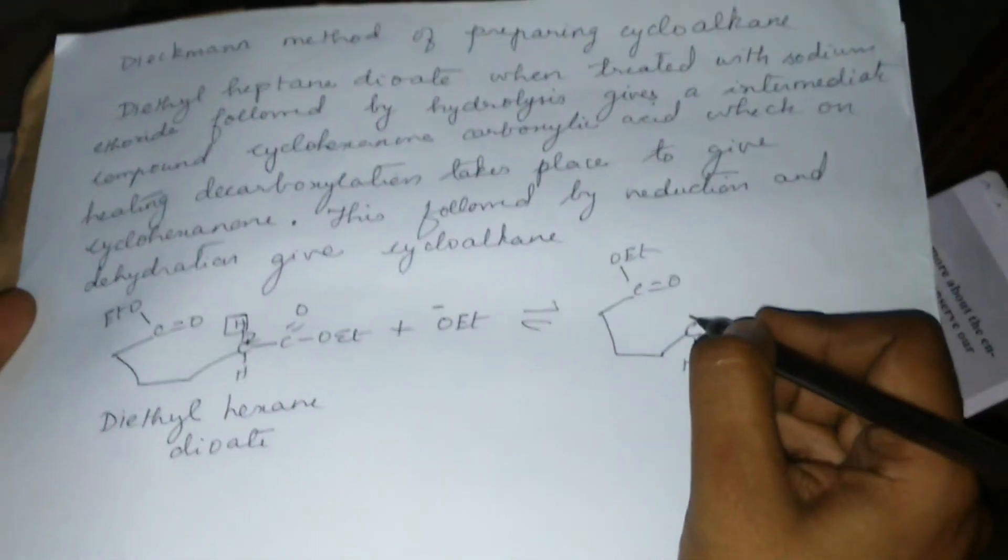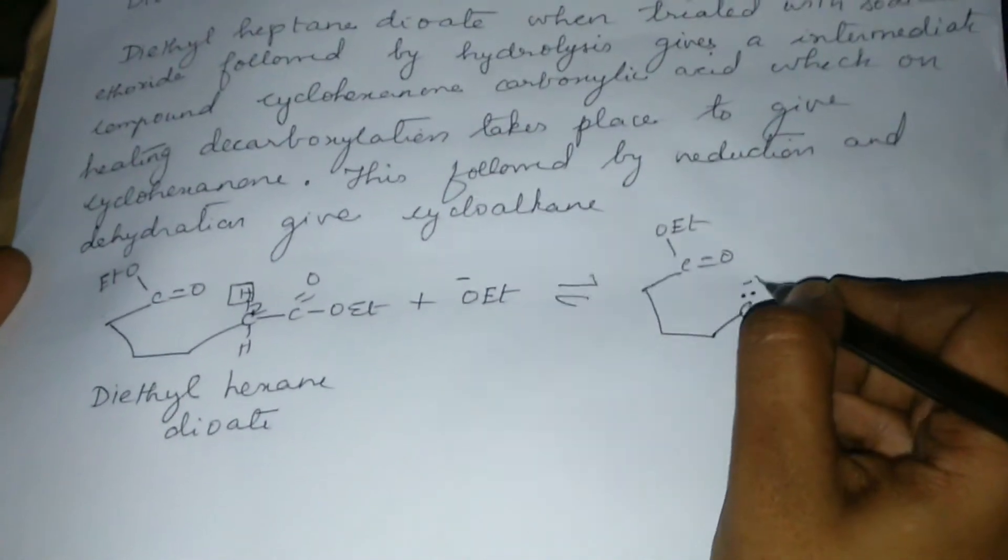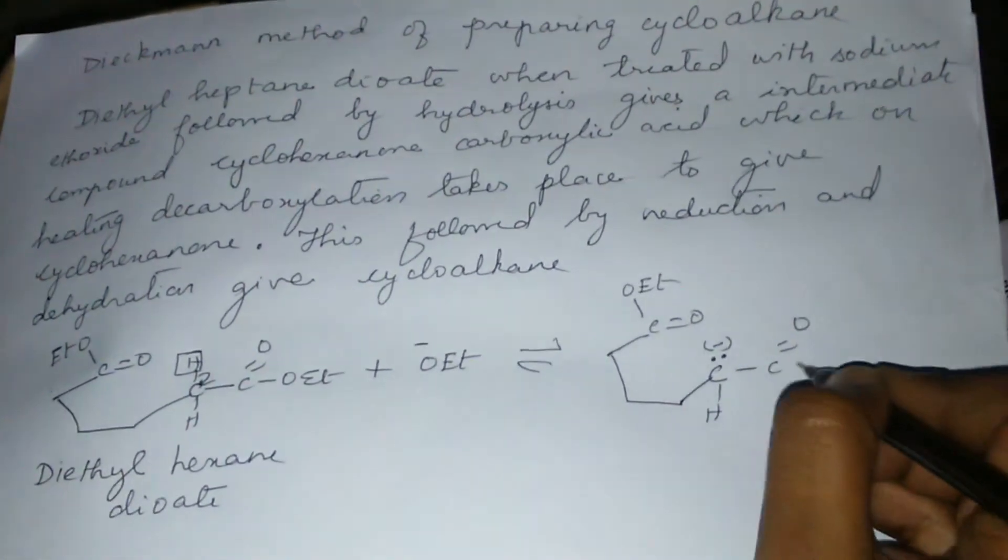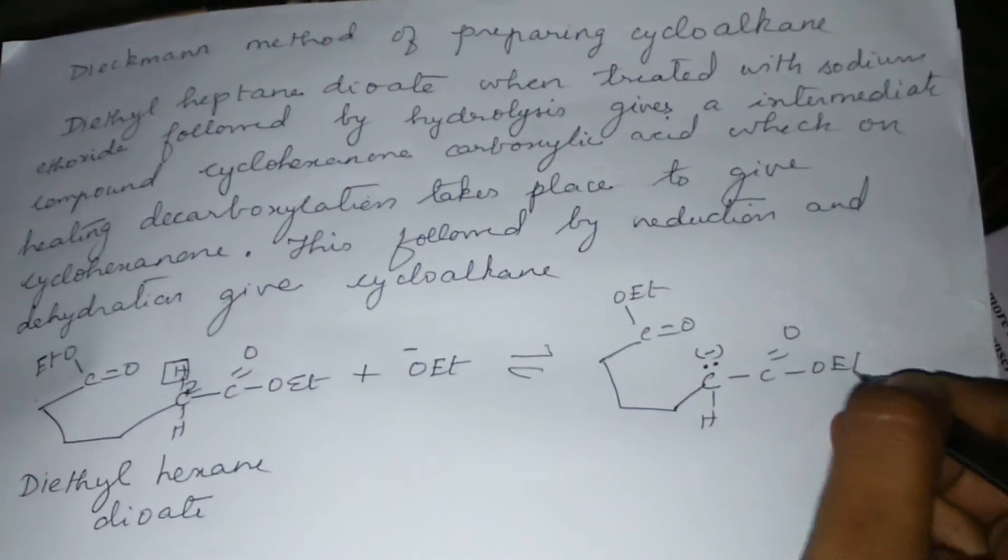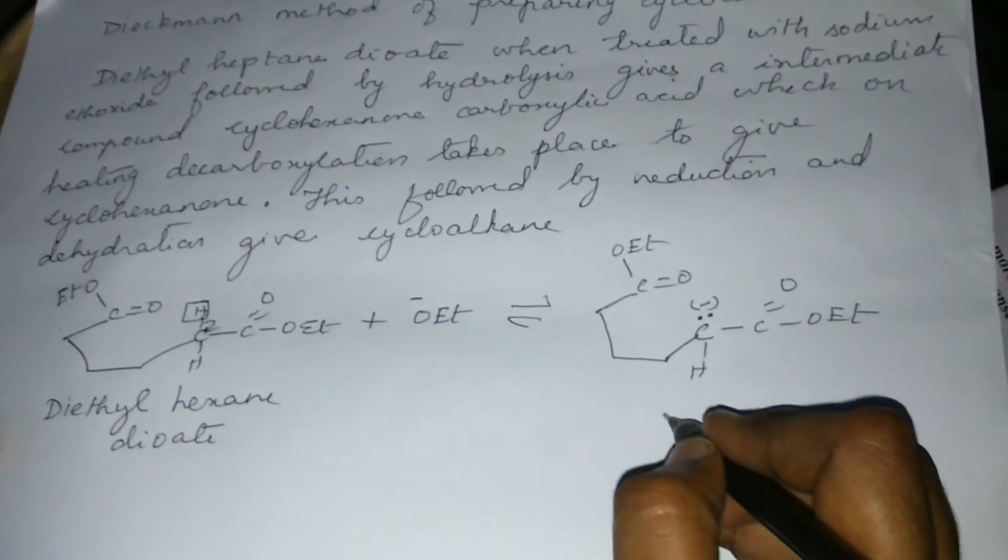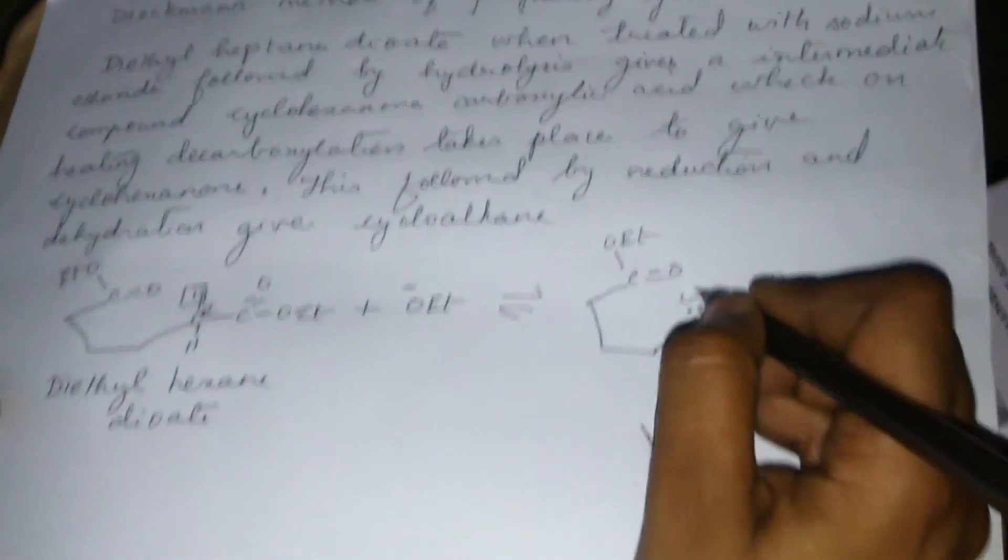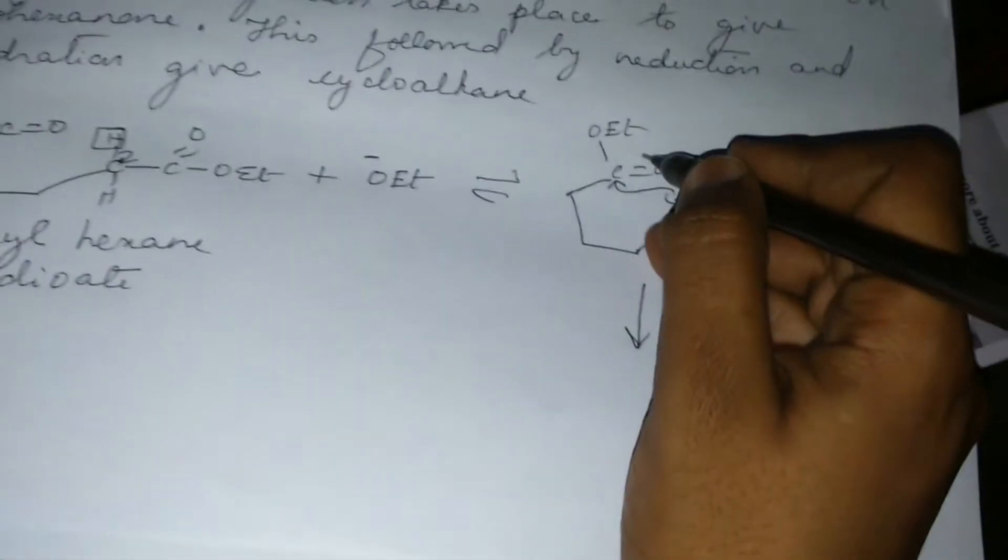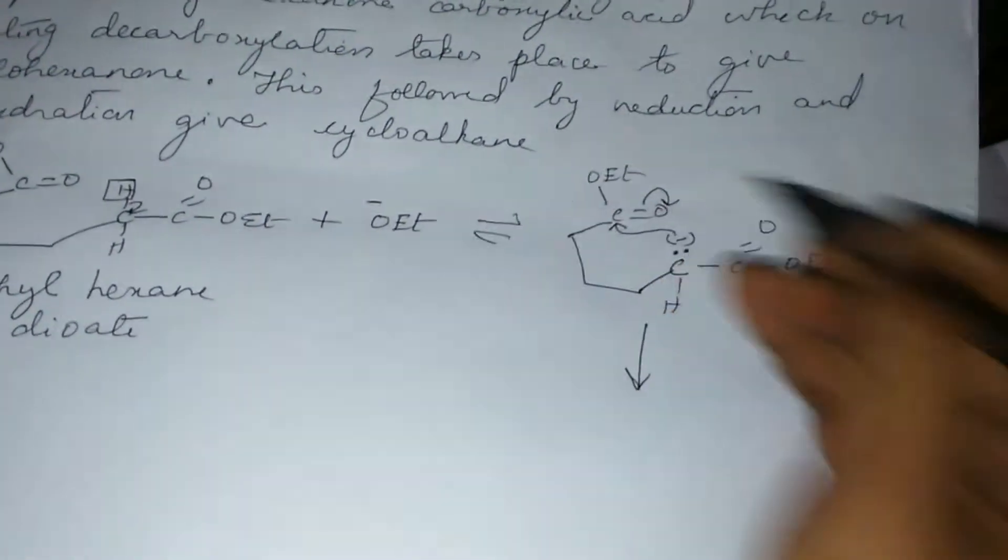See, carbon is gaining an electron pair, therefore it carries a negative charge. The next step, the carbanion attacks this electrophilic carbon, shifting this electron pair on the oxygen.